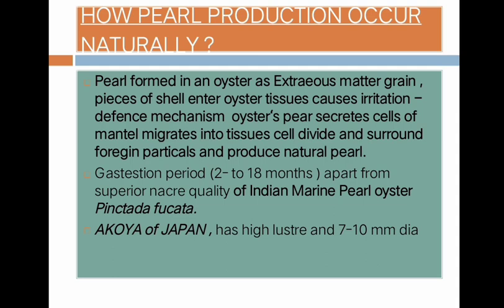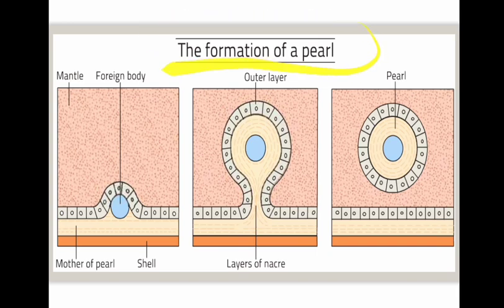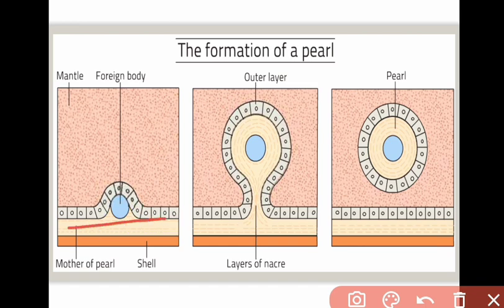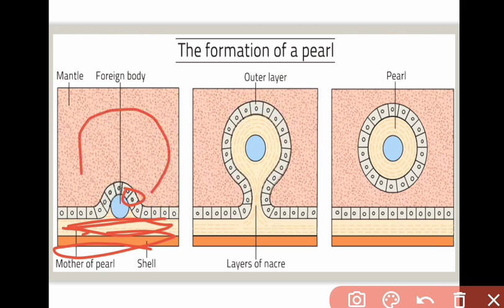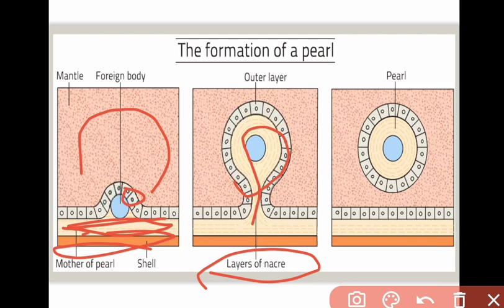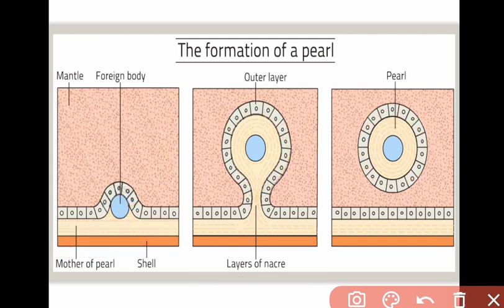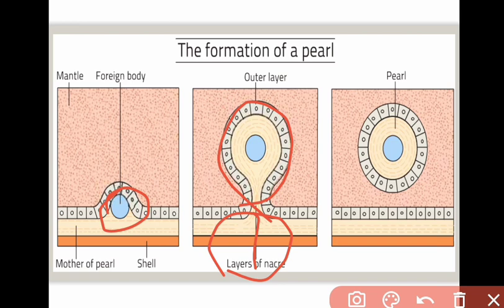Here is the diagram of pearl formation. The mother cell is present, and foreign particles enter - this layer of nacre covers the foreign particles, surrounding the whole pearl. Foreign particles like grains and shells enter, cause irritation, and as a defense mechanism, the nacre layer builds up around them. When this process is completely natural, the result is a natural pearl.